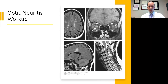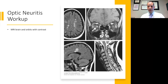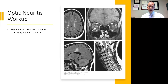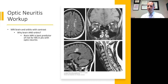The optic neuritis workup starts with the most important test, which is an MRI. Ideally we want to do an MRI of the brain and orbits. In the United States there can be insurance restrictions that don't allow both simultaneously, and you may have to choose which is more important for your clinical circumstances. An MRI of the brain is the best predictor we have for the risk of multiple sclerosis in patients with optic neuritis, and in some cases may even provide the diagnosis even if the patient has no other clinical history of any demyelinating attack.